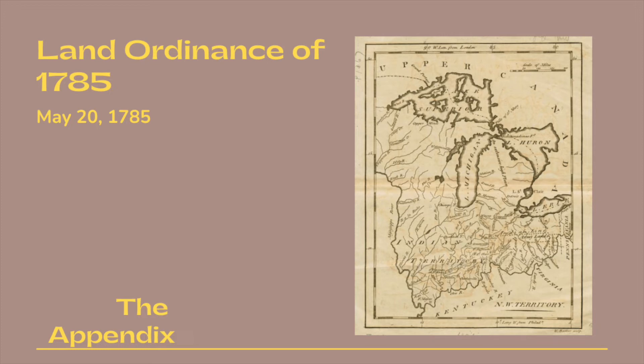And also the quality of the lands. The plats of the townships, respectively, shall be marked by subdivisions into lots of one mile square, or 640 acres, in the same direction as the external lines, and numbered from one to thirty-six, always being the succeeding range of the lots with the number next to that with which the preceding one concluded.